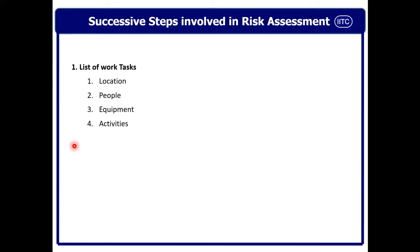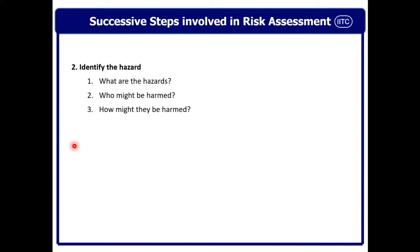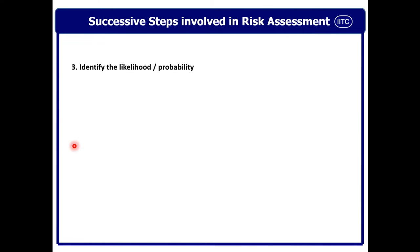Looking at the successive steps in more detail. Step one — list out work tasks: find out the location, the people enrolled, the list of equipment, and the activity. Step two — identify the hazard: do a deep dive into what the hazards are in that workplace and activity, identify who might be harmed if something goes wrong, and find out how they might be harmed. If you answer these three questions, you move to step three — identify the likelihood and probability of the event — and step four — identify the consequence or severity if that event happens.